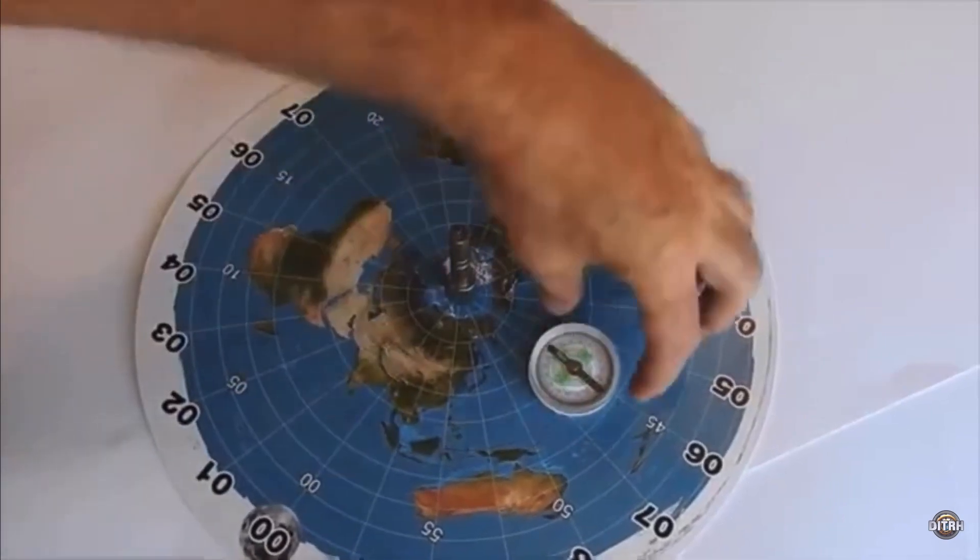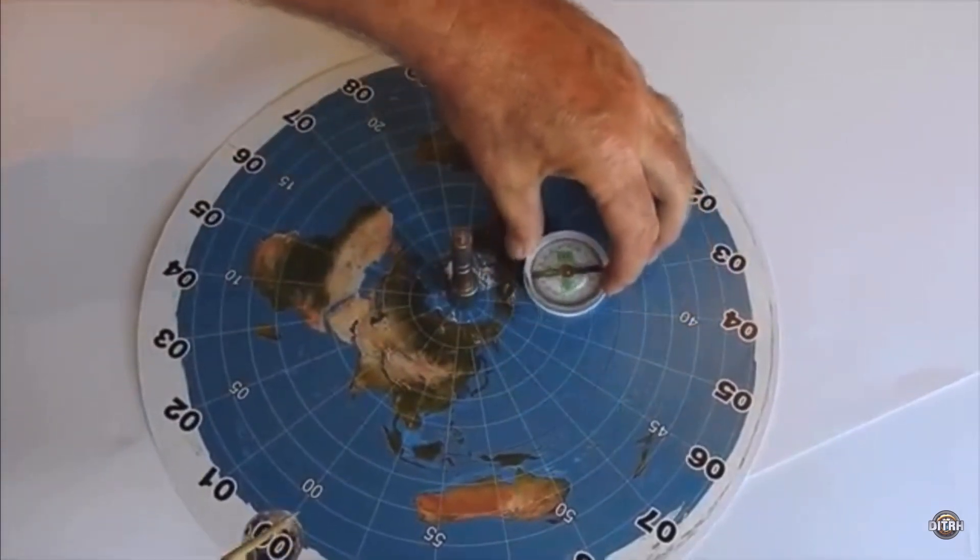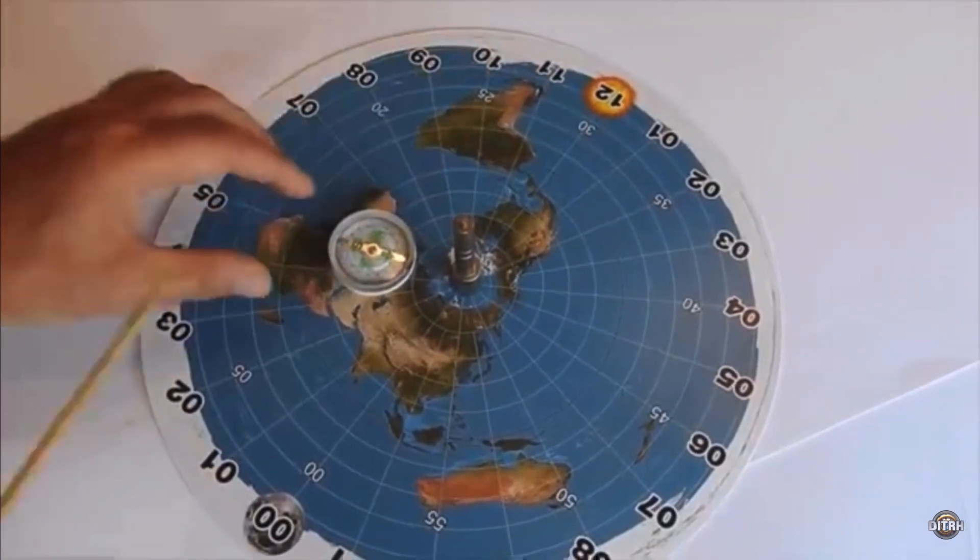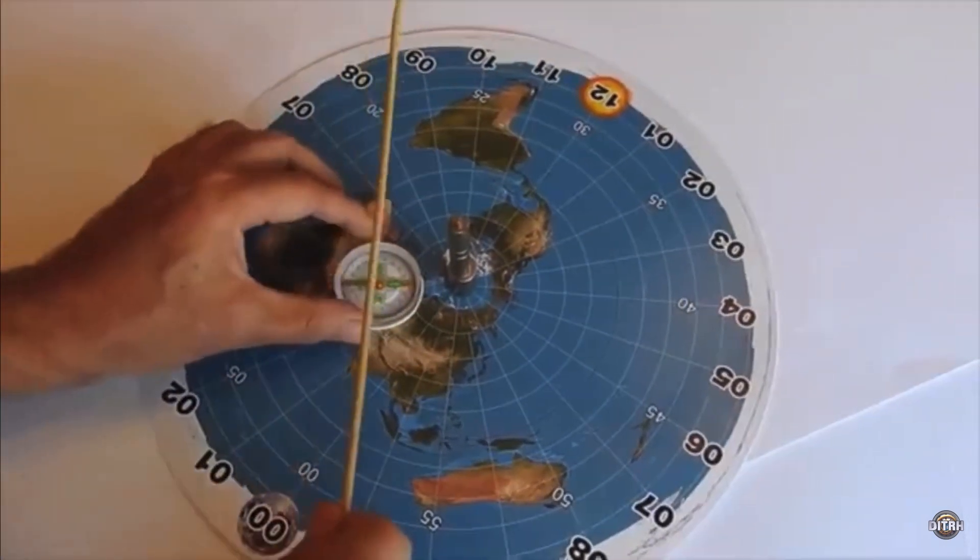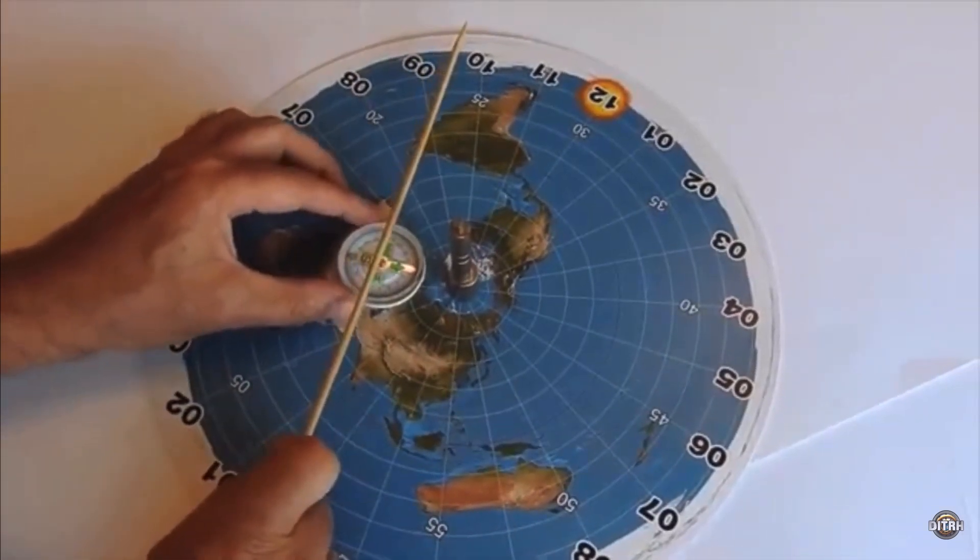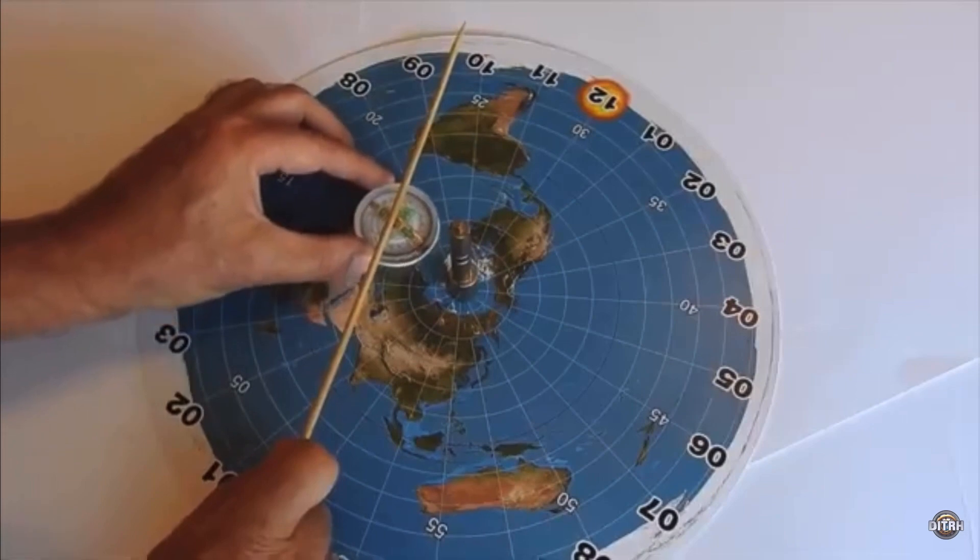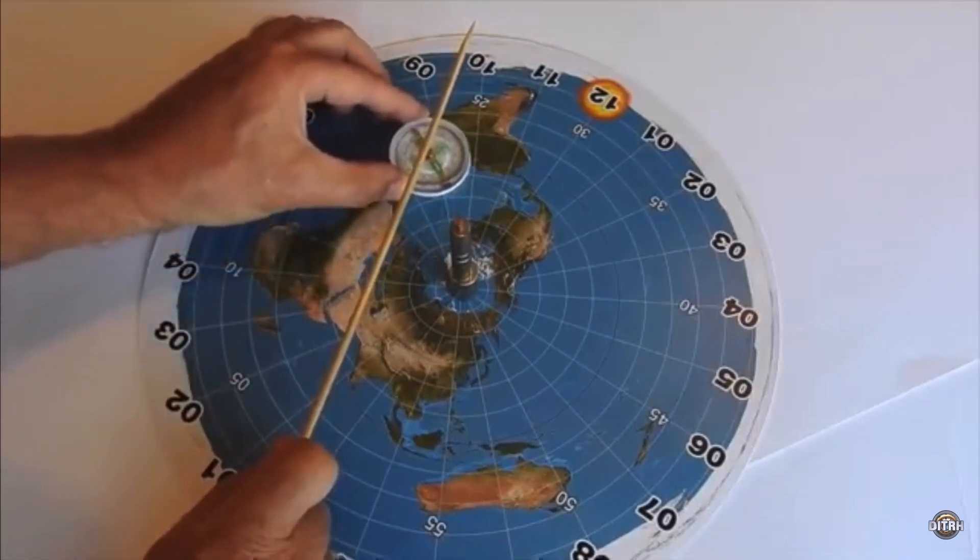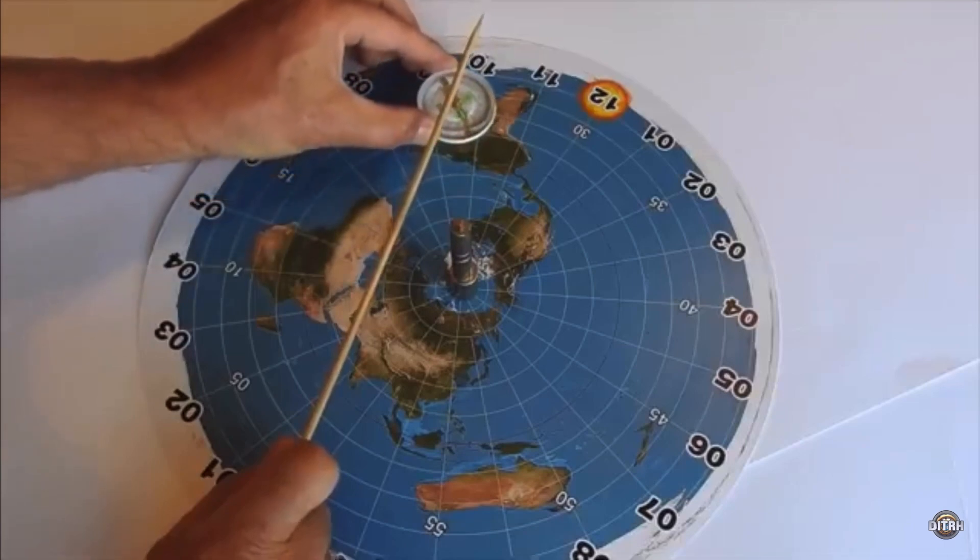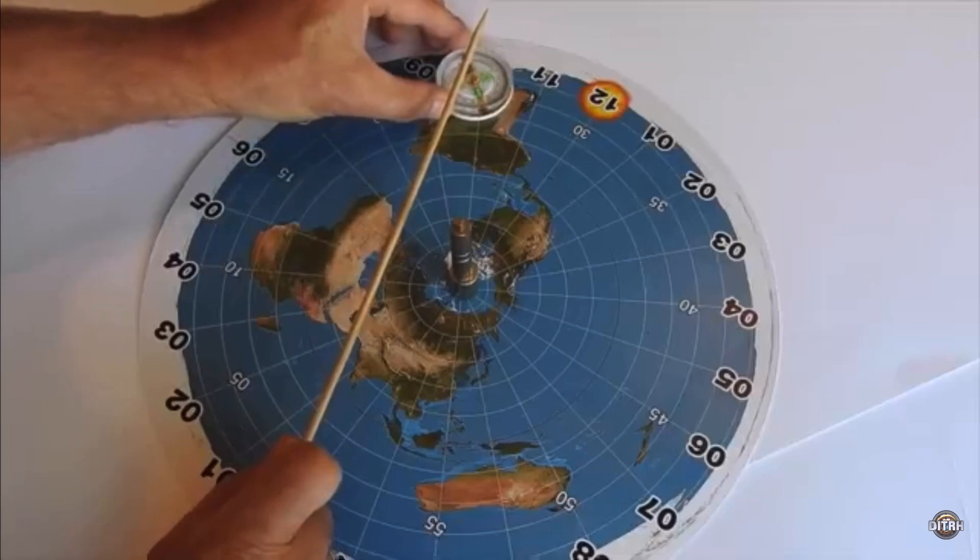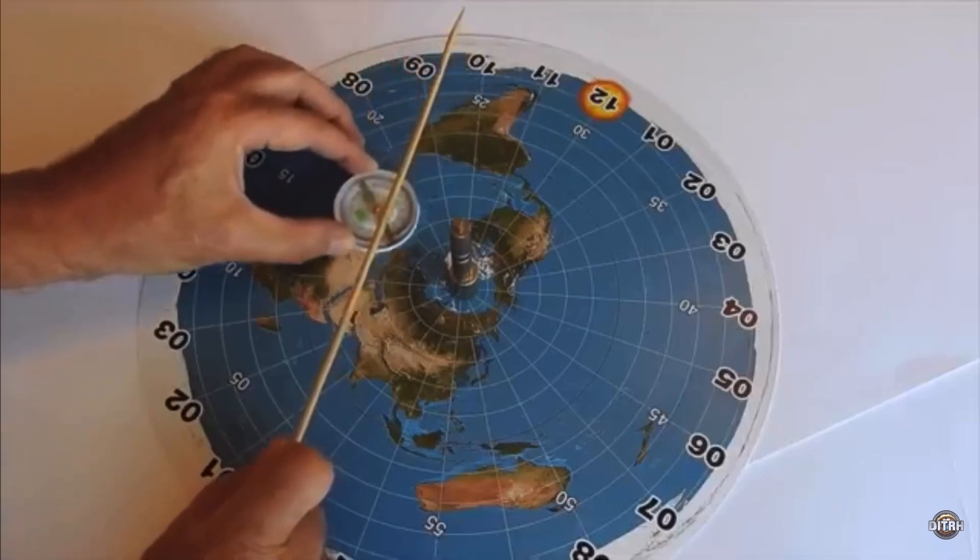So as you go west, you have to correct to the north constantly to maintain that heading of 270 degrees. Or if you're going east, 90 degrees, you have to keep turning left to maintain that heading. And this is done. Airplanes do it. The autopilot does it. Ship's captains have noticed that they always have to keep correcting to the north. And that's true on a ball. That doesn't prove the flat earth. That's true on a ball earth. But that's how it works.